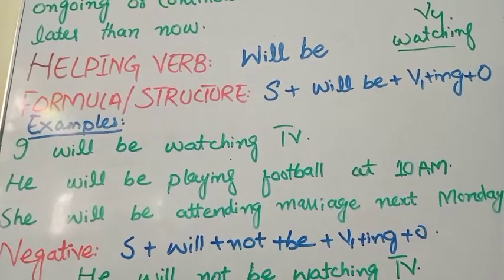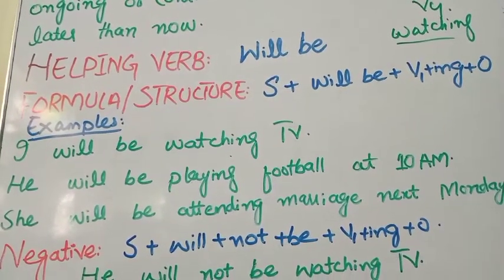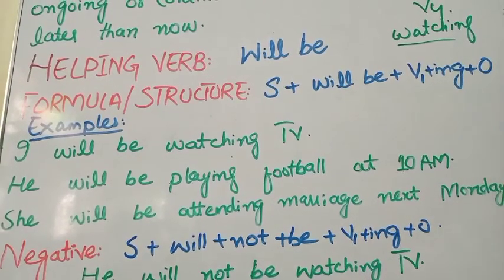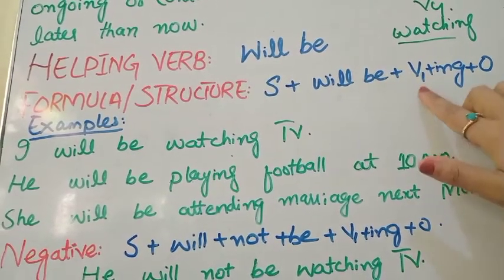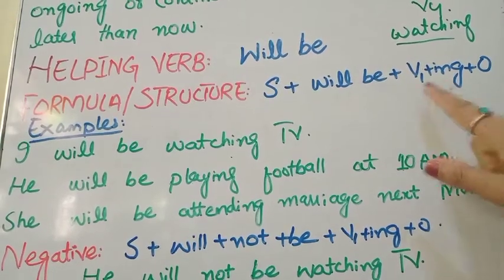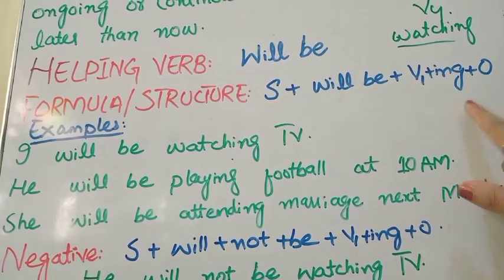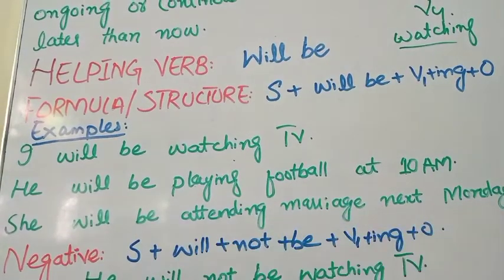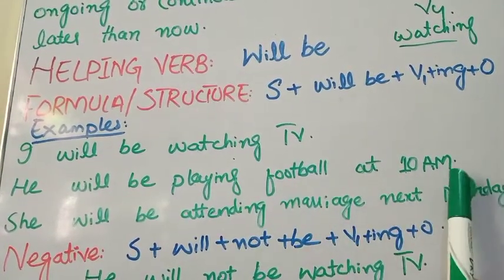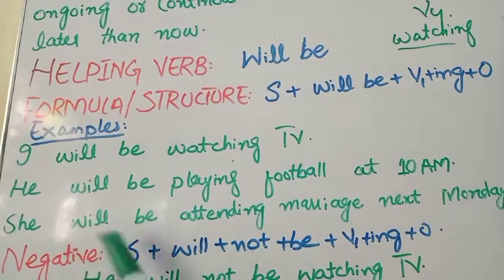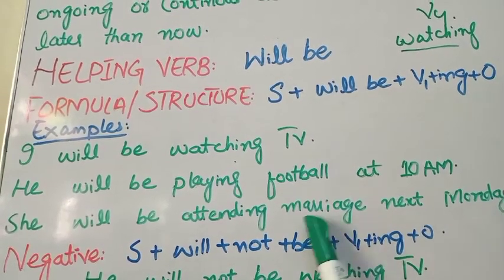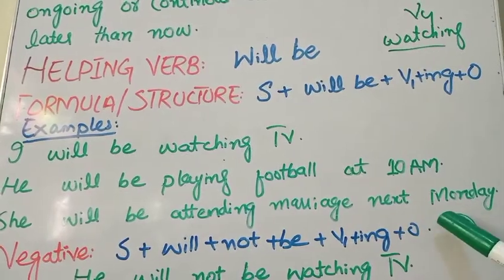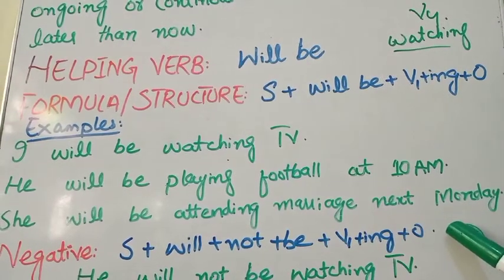For example: 'I will be watching TV.' Here, 'I' is the subject, 'will be' is the helping verb, 'watching' is the main verb (present participle — watch + ing), and 'TV' is the object. Other examples: 'He will be playing football at 10 am.' 'She will be attending marriage next Monday.' These are planned, ongoing actions in the future.